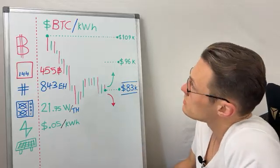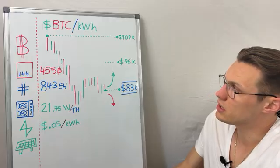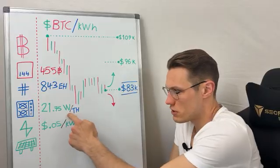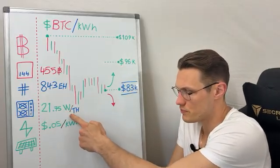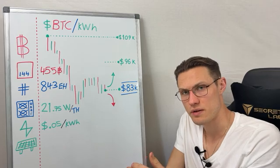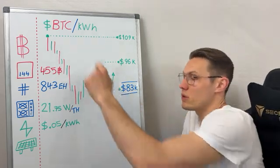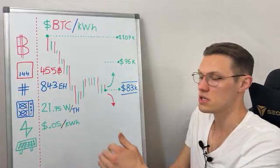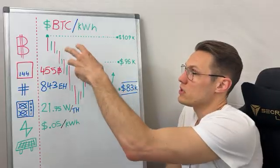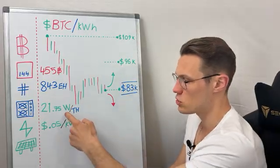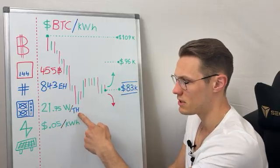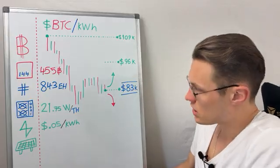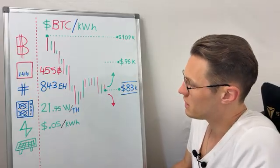To calculate the amount of Bitcoin you can earn per kilowatt hour, there are two fundamental things: the efficiency of your machine — your joules or watts per terahash. The lower the watts per terahash figure, the more efficient the machine and the higher the Bitcoin per kilowatt. The less efficient the machine — say 30 watts per terahash — the lower the Bitcoin you can earn per kilowatt, because the machine consumes more energy to produce the same amount of compute.